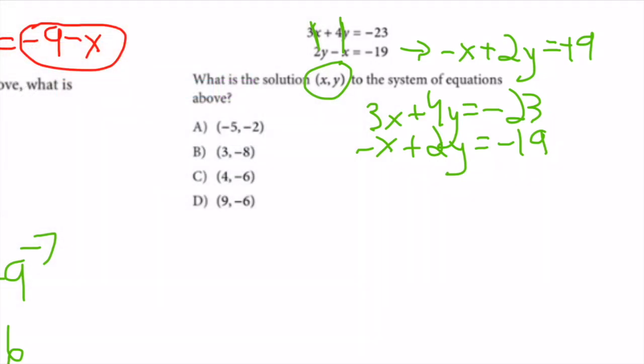When eliminating, I have to make the coefficients of either x or y the same in both equations. I have 4y in the first equation, so I'll multiply the entire second equation by 2 to also get 4y.